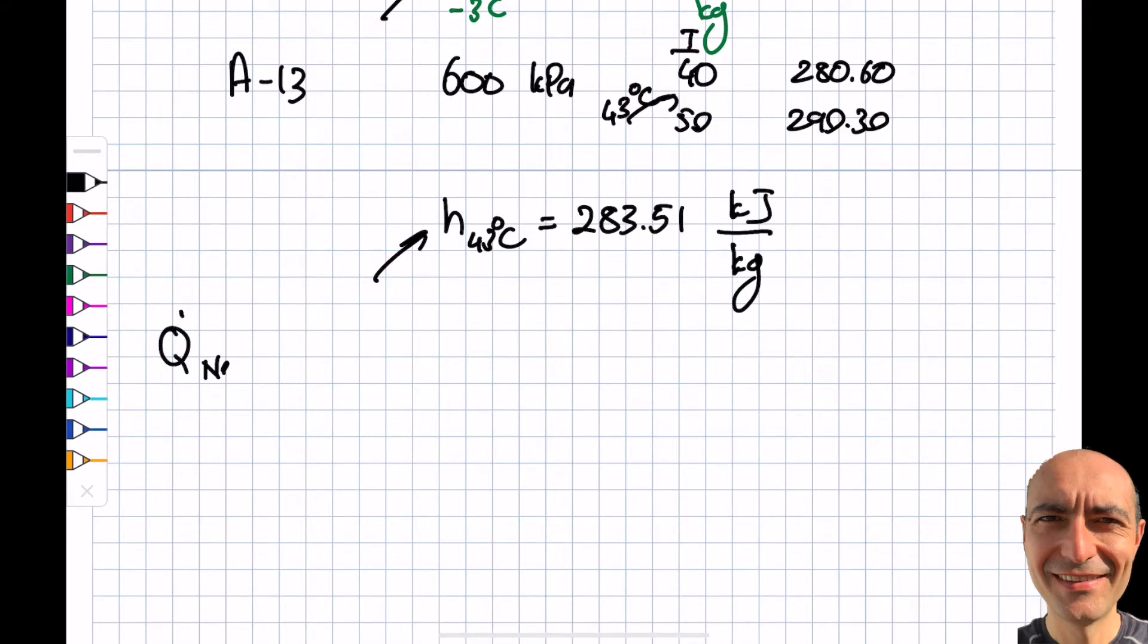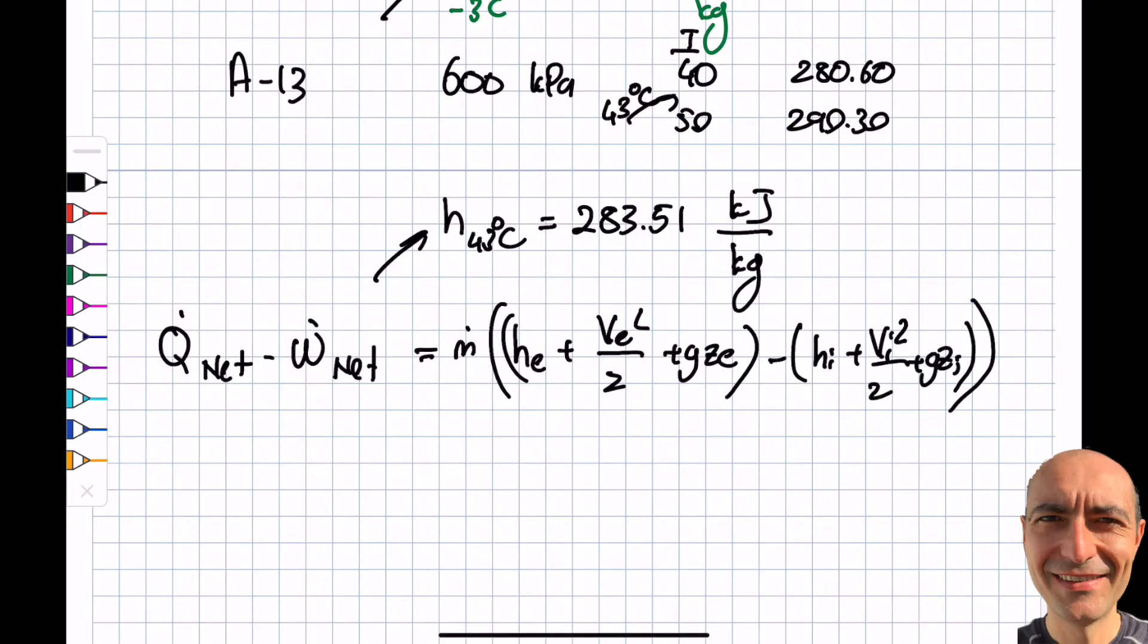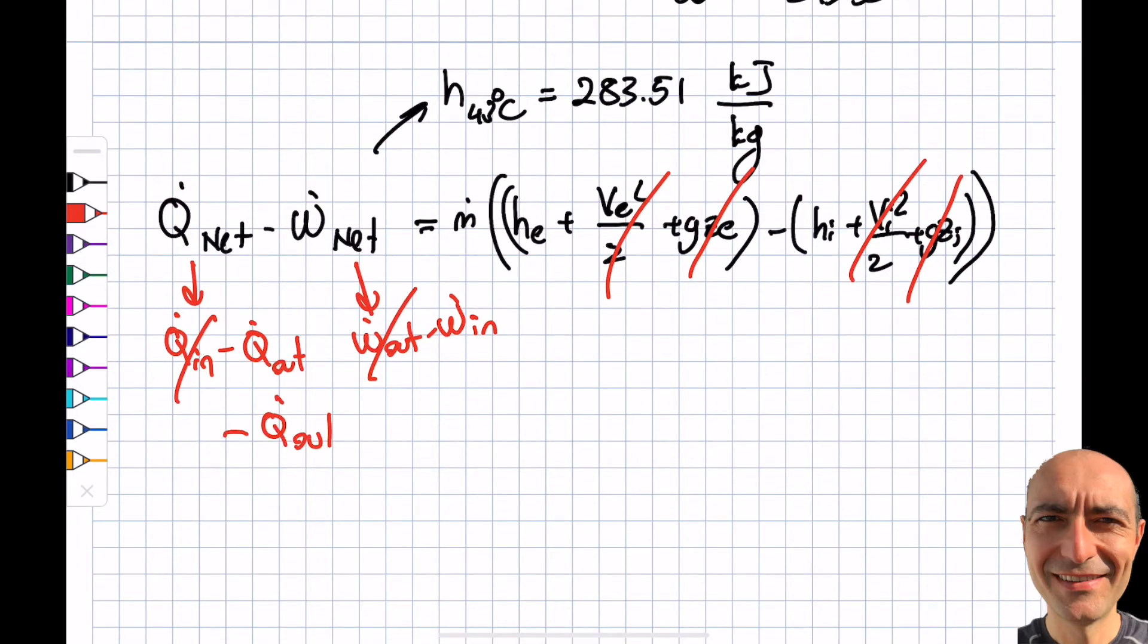So let's write it. Q dot net minus W dot net will be equal to M dot times H exit plus V exit square by 2 plus GZ exit minus H inlet plus V inlet square by 2 plus GZ inlet. And I did it many times so I'm not going to spend a lot of time, but the potential energy changes and the kinetic energy changes will be neglected over here. I wasn't given any information to begin with anyways. What can you do? And what about the Q net? So the Q net will be Q in minus Q out. So the Q in will be zero. I'm not putting any heat into the system. Actually the heat is being lost from the system, from the compressor. So that's going to stay. And W that is W that out minus W dot in. I wish I can extract energy from it, but that's not realistic. So that's not going to happen. I'm only going to have W dot in.